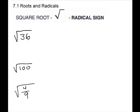For our first one, the square root of 36: what goes times itself to give 36? We want the positive square root, so it will be 6. Square root of 100 will be 10. This one is a fraction, and we'll learn some rules for those later, but the numerator and denominator are both perfect squares. If we just take the square roots there, we get 2/3, because 2/3 times 2/3 gives 4/9.